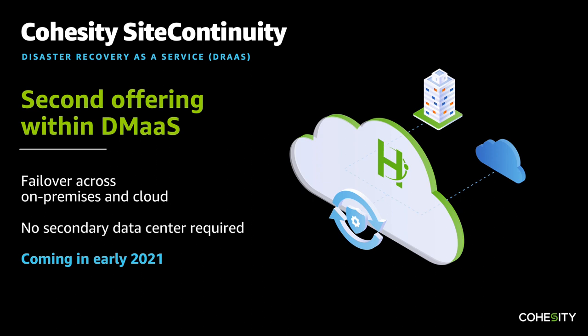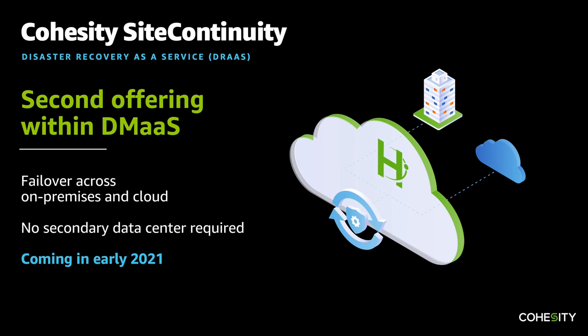Let's now talk about the second offering, and that is Site Continuity — a feature of Cohesity which is disaster recovery as a service on AWS. That provides for failovers across on-premises and the cloud. Our customers don't even need a secondary data center anymore. They can take their primary data center and fail it over to the cloud, or vice versa. This is going to be available in early 2021.